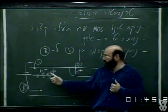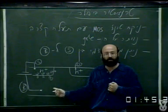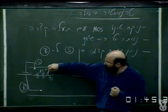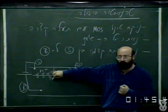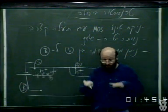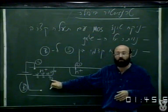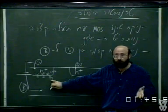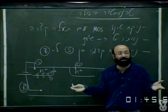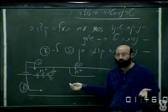עכשיו השאלה היא מה יקרה לאלקטרונים שהוזרקו מהסורס אל הבלק? אלקטרון מפה מצא את עצמו מוזרק מעבר למחסום הפוטנציאל - המחסום הפוטנציאל בדרך כלל עוצר אותו, אבל הפעם בגלל המתח שקצת מיישר את הפסים שם, הוא מוזרק ומוצא את עצמו באזור הניטרלי של הבלק. מה משפיעה על התנועה שלו? דיפוזיה - אין שדה, זה אזור ניטרלי, הוא יעשה דיפוזיה.